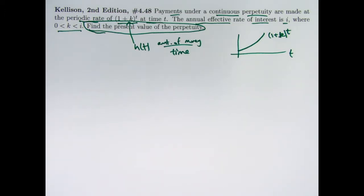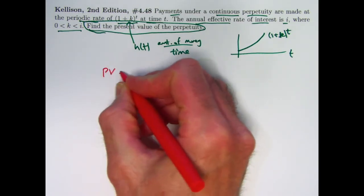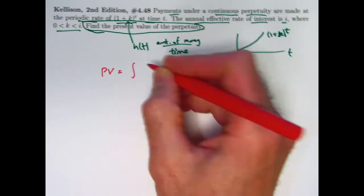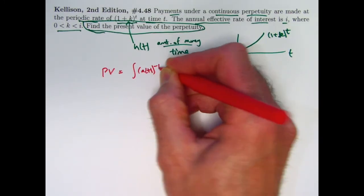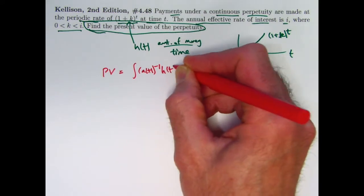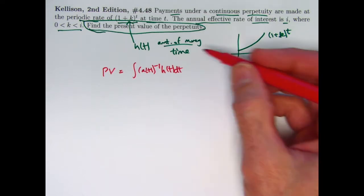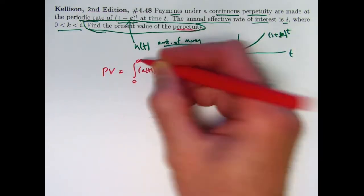In the last video I talked about the general formula for the present value. The present value in such a situation is going to be the integral of the reciprocal of the amount accumulation function times h of t dt over whatever interval you're considering. In this case we are letting it go on forever. It is a perpetuity. So we go from 0 to infinity.